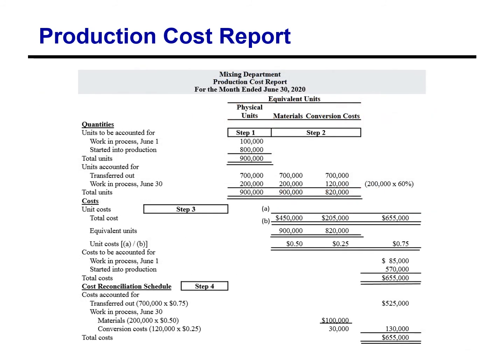At this point, Kellogg is ready to prepare the production cost report for the mixing department. This report is an internal document for management that shows both production quantity and cost data for a production department. This slide shows the completed production cost report for the mixing department and identifies the four steps used in preparing it.